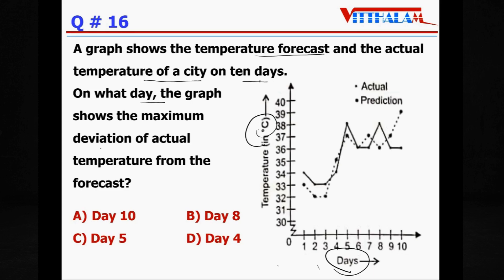We have to find out the maximum deviation. Maximum deviation means we have to find out the distance between these two. Here it is somewhere around 1 degree Celsius. In the next day it is also somewhere around 1, somewhere around 1, somewhere around 1. This is also 1, but if you see here...